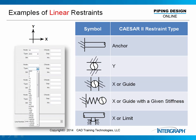Here is a list of different types of restraints available in CAESAR II, shown with symbols. This symbol represents Earth — the pipe is connected to it and cannot move. That's an anchor: all six degrees of freedom are constrained. Here the pipe cannot move in the Y direction, and here the pipe cannot move in the horizontal direction perpendicular to the pipe. These are all linear restraints — it doesn't matter which direction you pull, left or right, you get the same stiffness from the support.